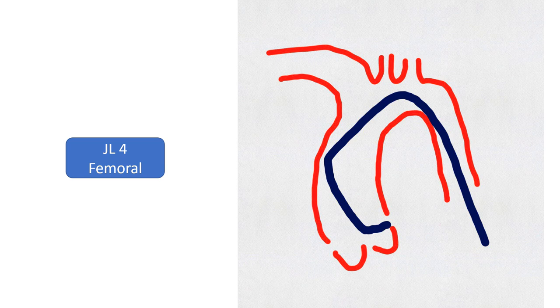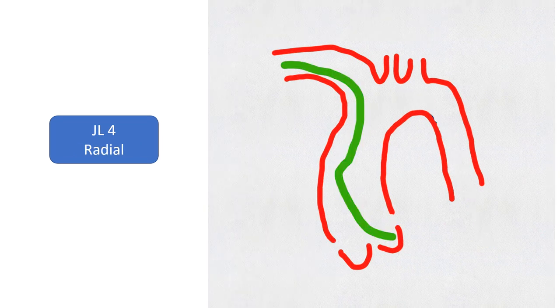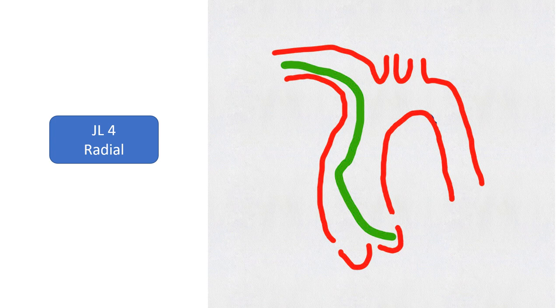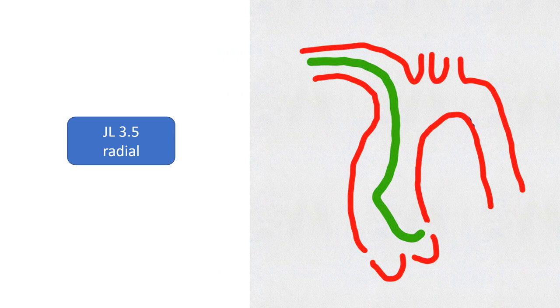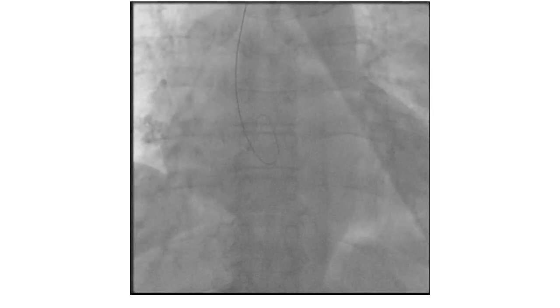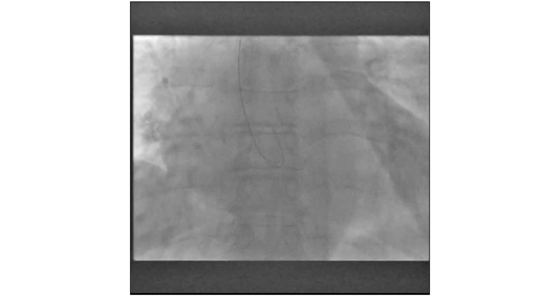The diagram shows a normal fit of JL4 to the left coronary artery. When the same catheter is used in radial approach, it appears to be large and the tip points downward. Engagement and angiography will not be optimal. That's why downsizing to JL3.5 is needed for right radial approach, and this is usually optimal as shown in this fluorosave.